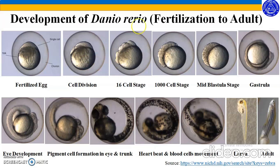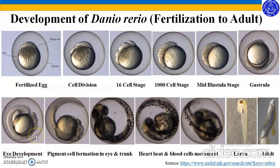This stage then reaches the 1000-cell stage, and after the 1000-cell stage, it reaches the mid-blastula stage. After mid-blastula stage, gastrulation starts. During gastrulation, the three germ layers are formed. Apart from the three germ layers, different organs start forming after gastrulation. The first organ to be formed is the eye. The eye develops, and after that, the pigment cells of the eye and the trunk region of the organism develop. In this picture, you can see the pigment that has developed in different parts of the body.